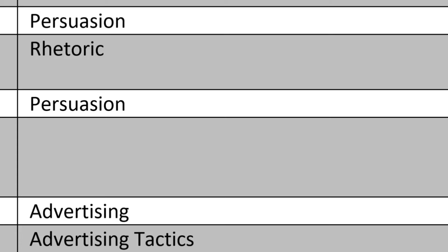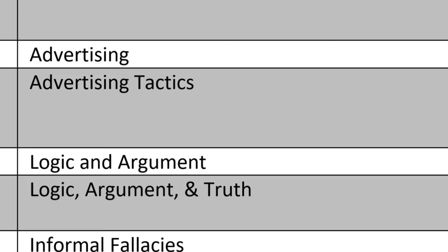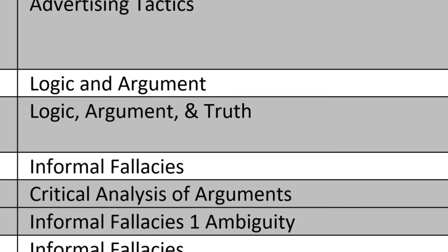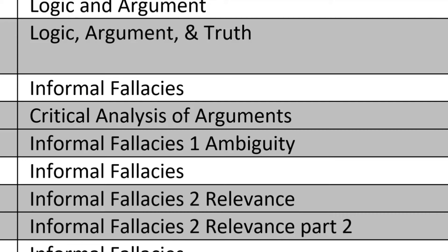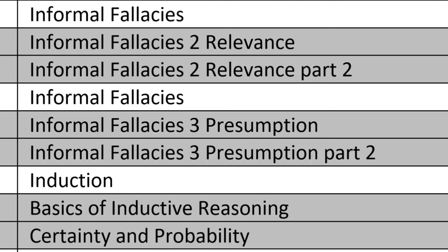After advertising, we get into the basics of logic, argument, and truth — starting with informal logic, where we'll look at fallacies. We'll talk about critical analysis of arguments and spend a lot of time on informal fallacies, which I'm breaking into three subcategories: fallacies of ambiguity, fallacies of relevance, and fallacies of presumption.